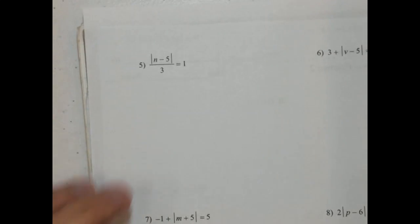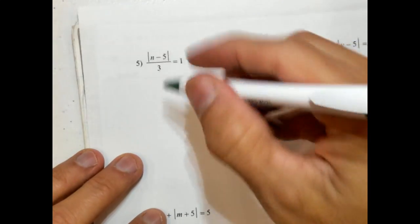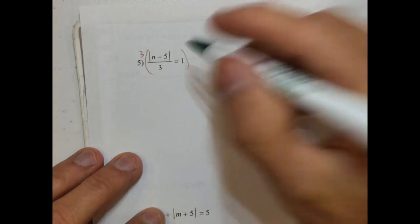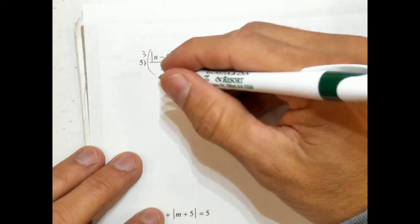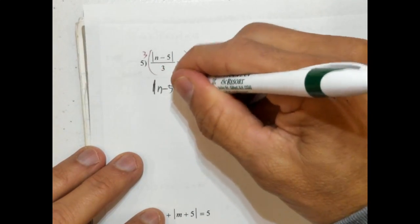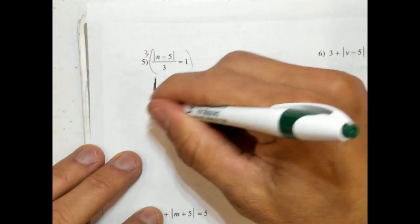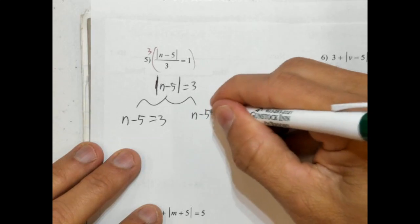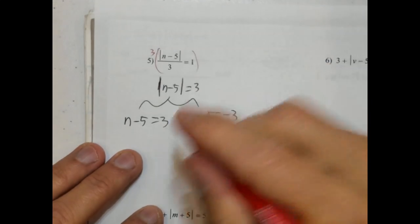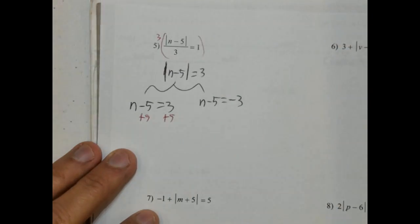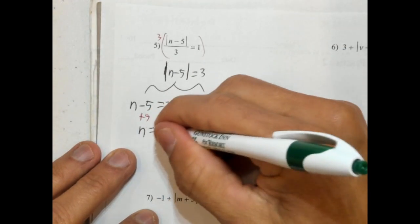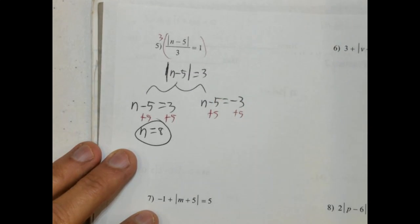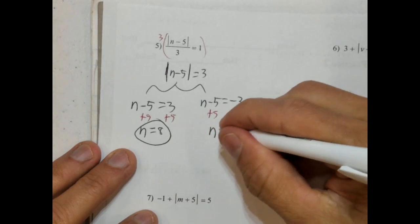Number 5: we have the absolute value of n minus 5 over 3. We have to get rid of that 3. We're going to multiply both sides by 3 since it's in the denominator and not inside the absolute value. So absolute value of n minus 5 equals 3. Now we can split and rewrite it: n minus 5 equals 3, and n minus 5 equals negative 3. Adding 5 to both sides, n equals 8 and n equals 2.